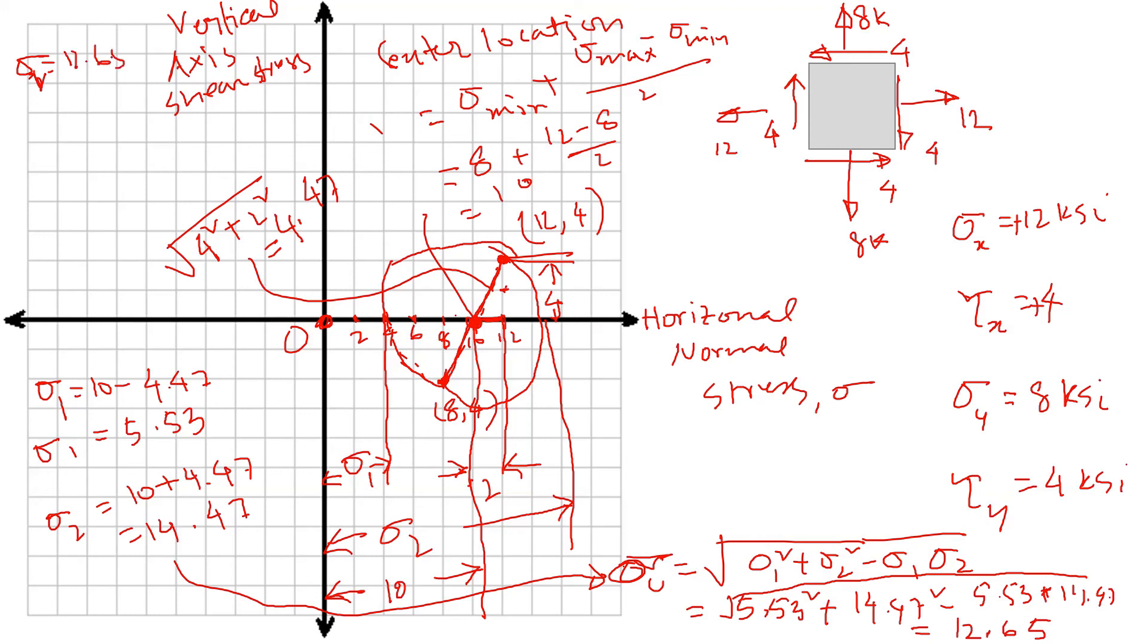Then calculate the von Mises shear stress, which is τ_v. τ_v is square root of 3 times the shear stress from the maximum shear stress from the Mohr circle. So in this case, which is the radius, 4.6—square root of 3 times 4.47. So von Mises shear stress I have calculated 7.74 ksi.